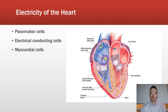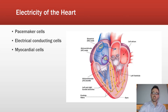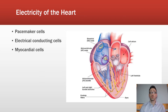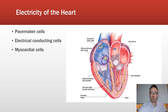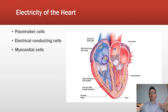At the AV node there's a slight pause, then it fires action potentials that propagate through the bundle of His into the ventricular septum. The bundle of His splits into the right bundle branch and the left bundle branch. The right bundle enters the right ventricular tissue, while the left bundle sends signals toward the apex and up laterally along the wall of the left ventricle.